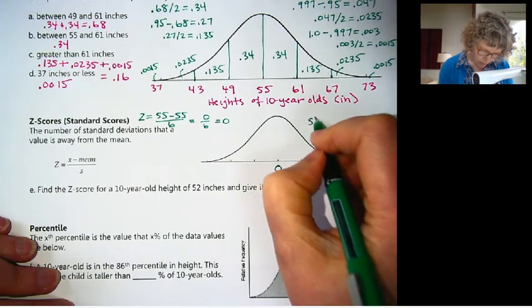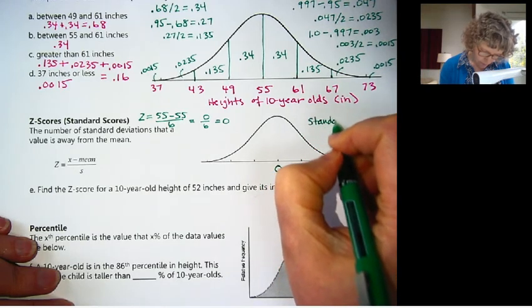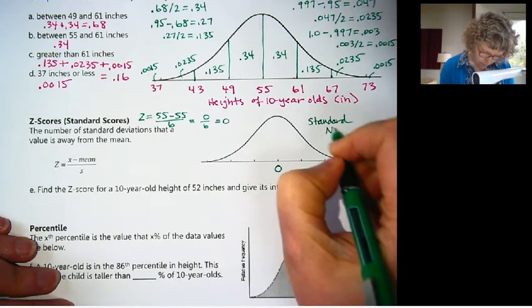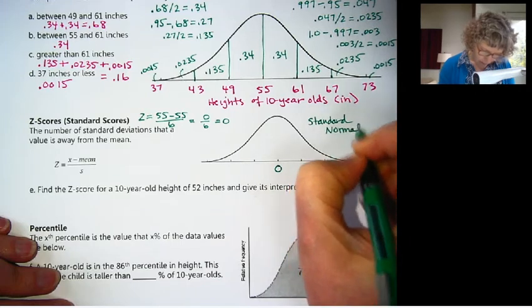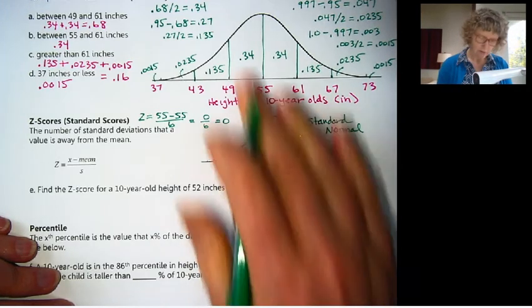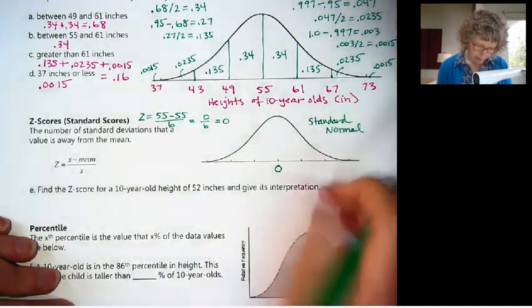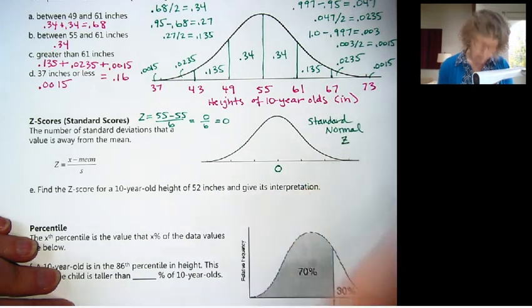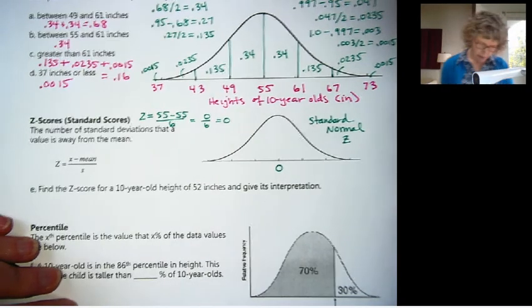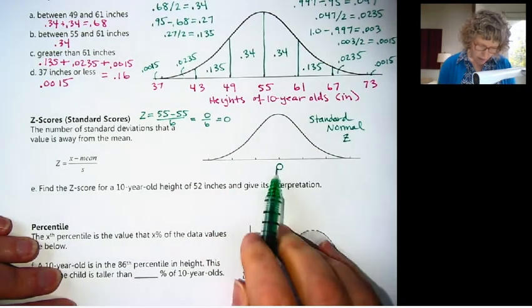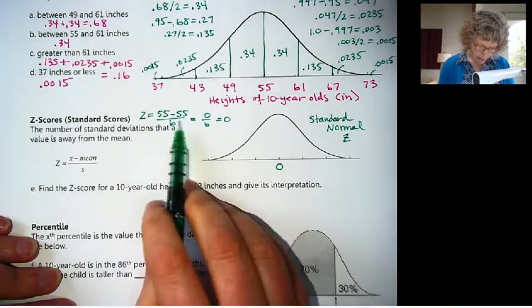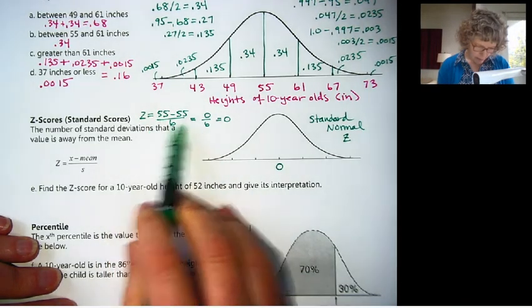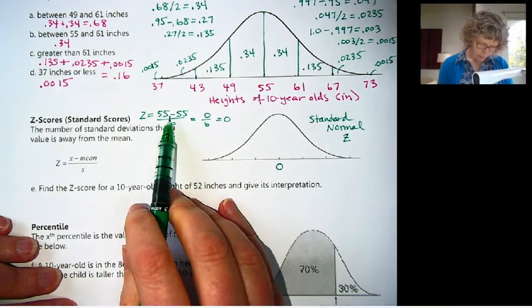So what that's saying is someone with a height of 55, a 10-year-old with a height of 55, is 0 inches away from the mean. They're right on the mean. And so we're going to change this to a 0. This is a standard normal.